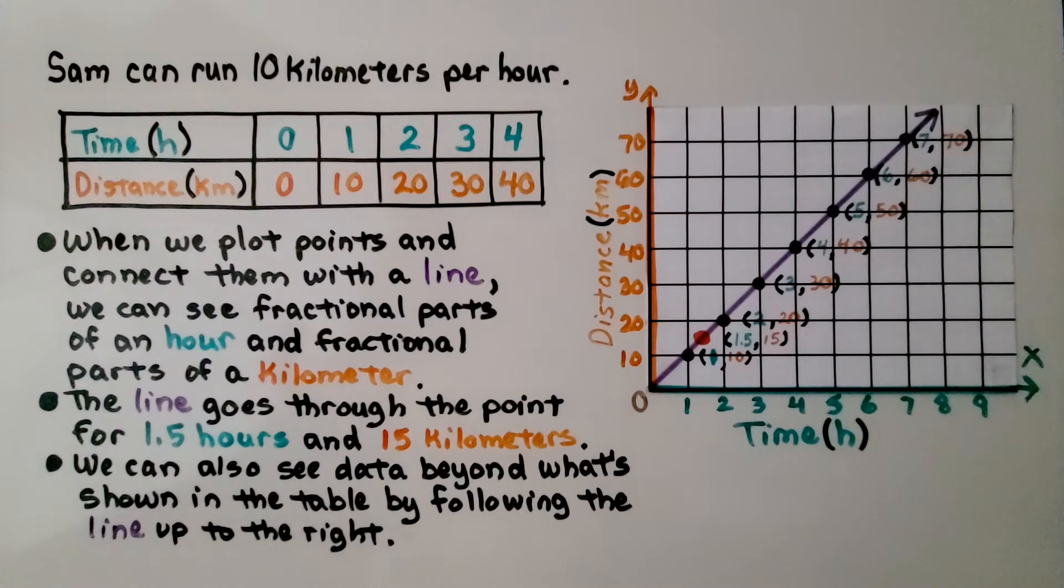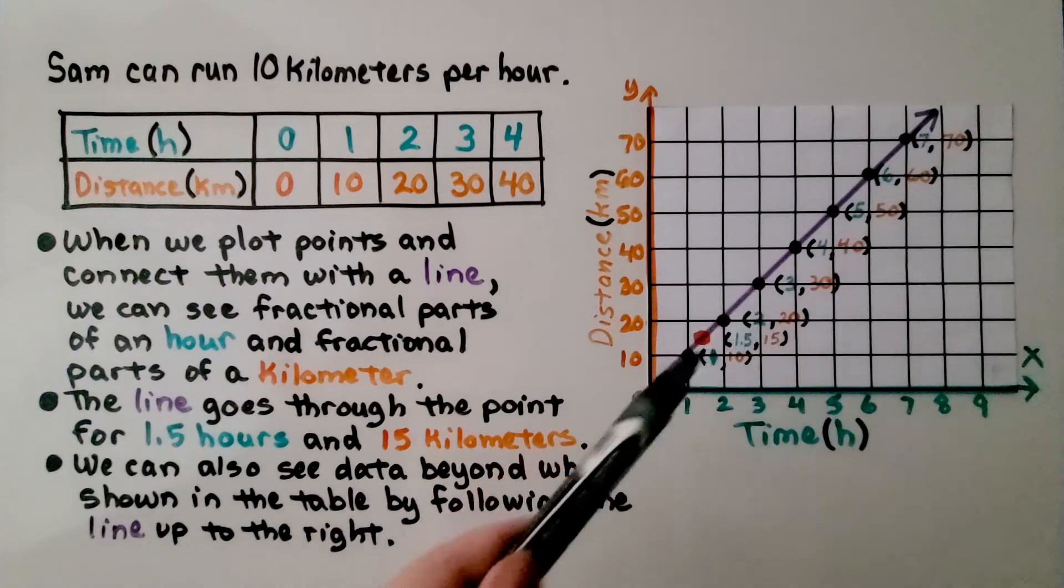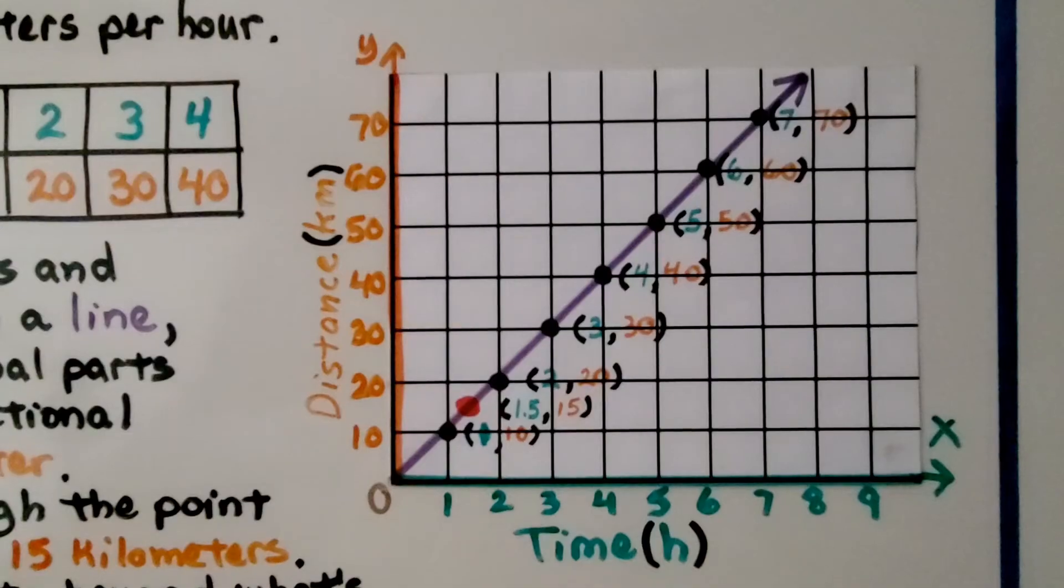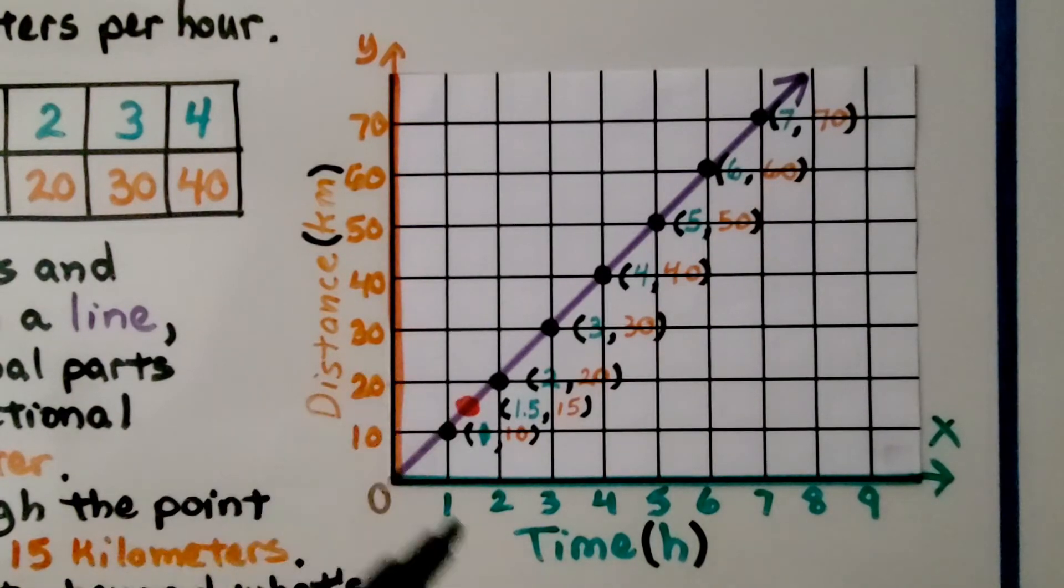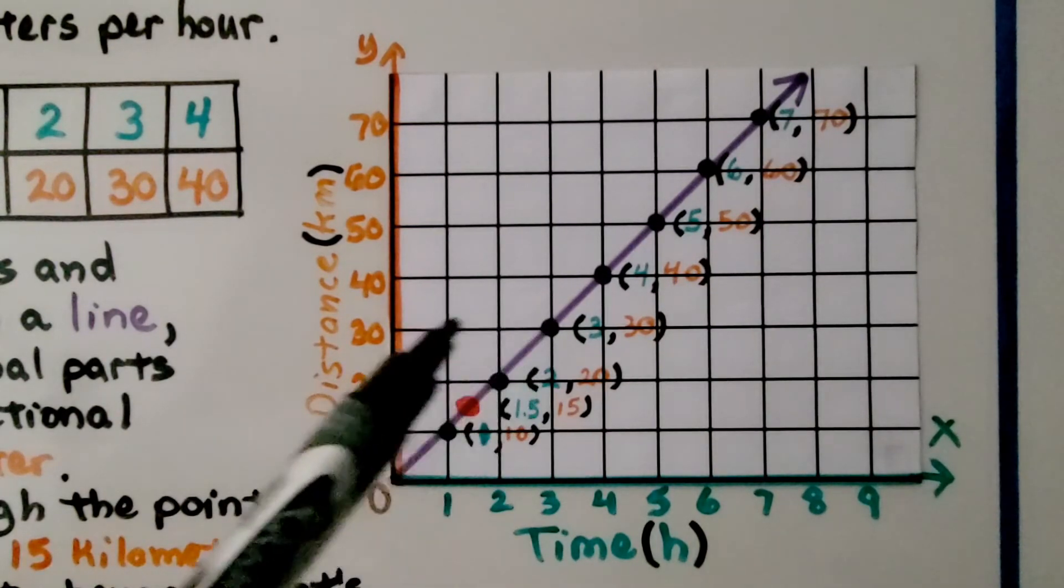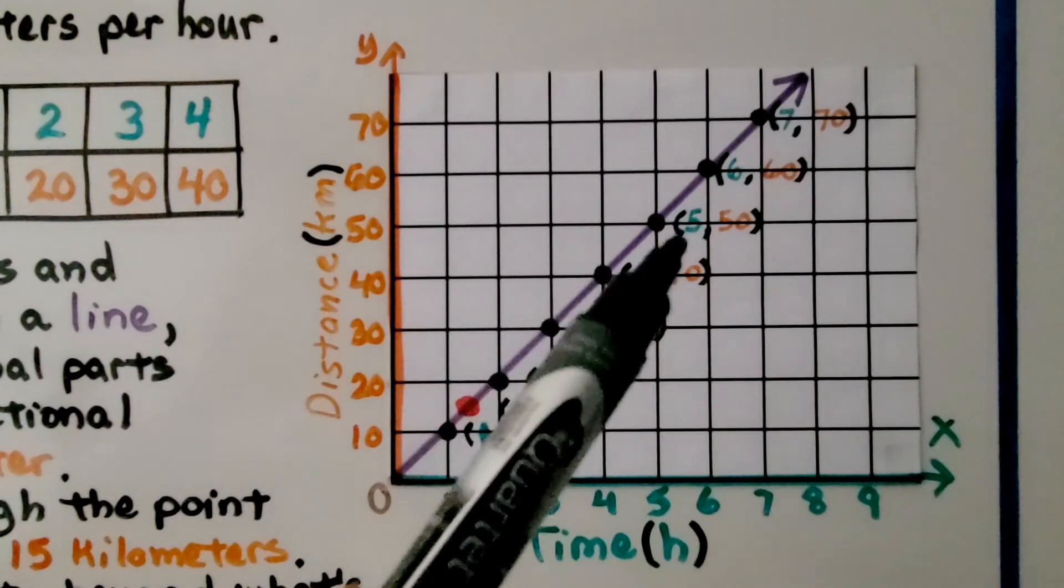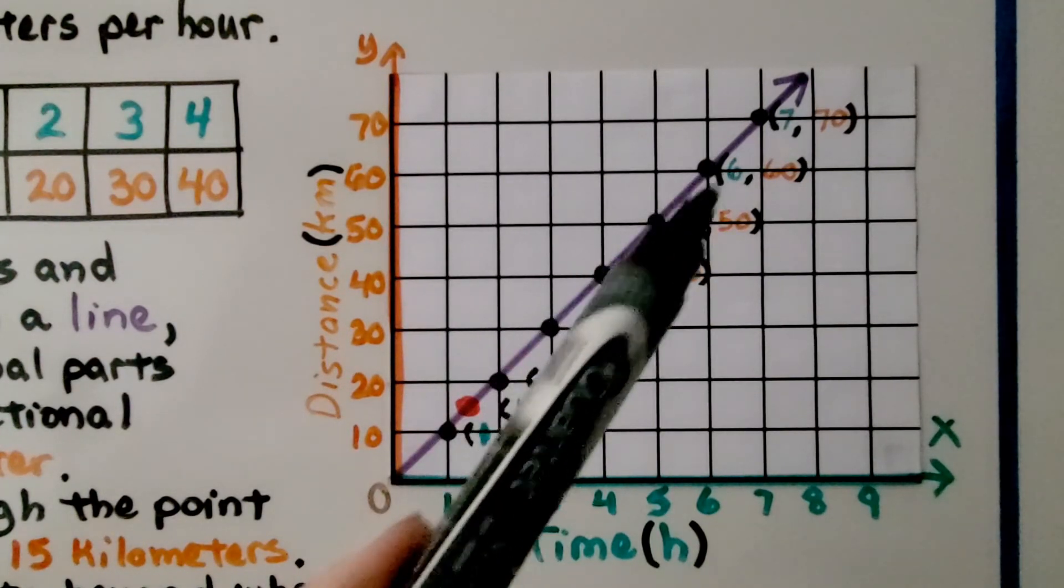When we plot points and connect them with a line, we can see fractional parts of an hour and fractional parts of a kilometer. If you look at this line, let's take a closer look. We've plotted the points for 1 and 10 and 2 and 20 and 3 and 30, 4 and 40, 5 and 50 because he's going 10 per hour.